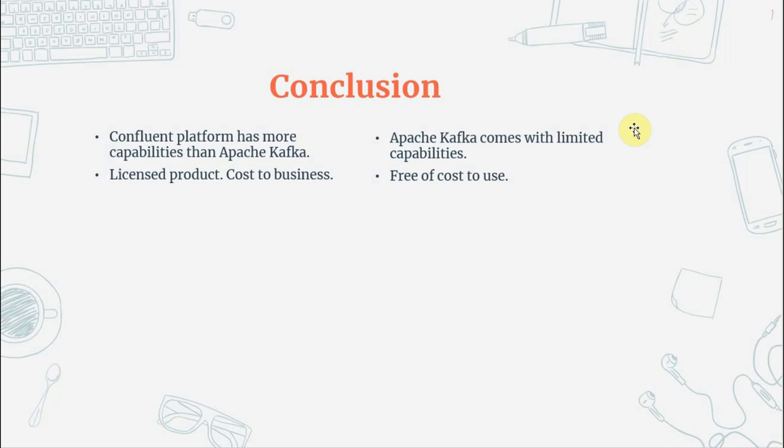In conclusion, Confluent Platform has more capabilities than Apache Kafka, but it is a licensed product so there is a cost to the business. On the other hand, Apache Kafka is open source and free of cost, but comes with limited capabilities.